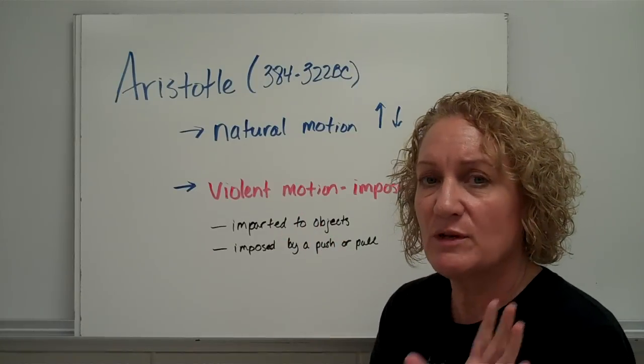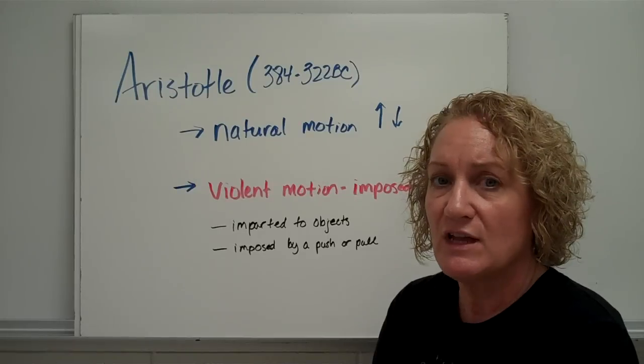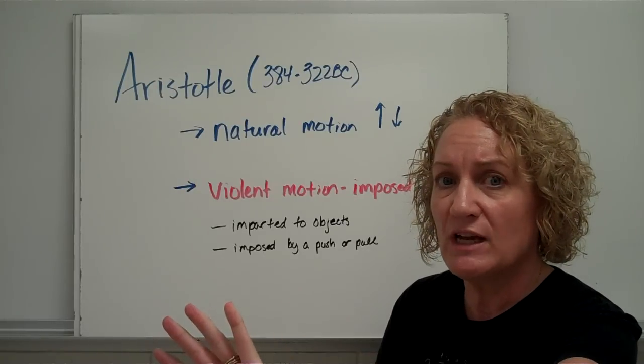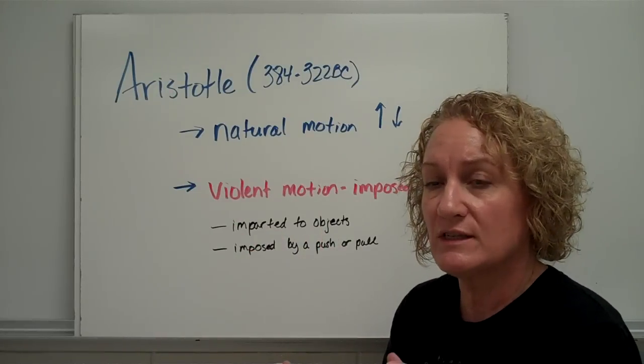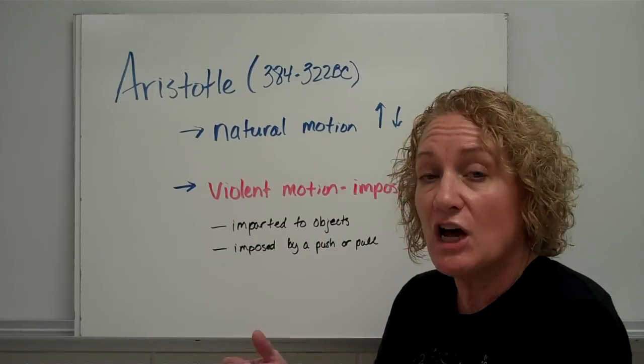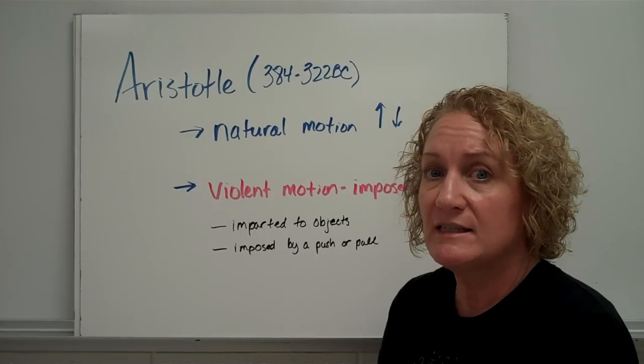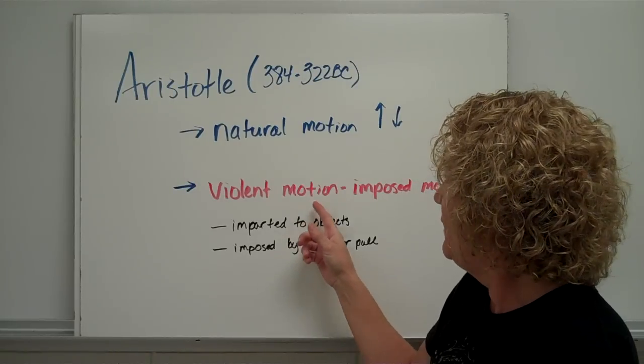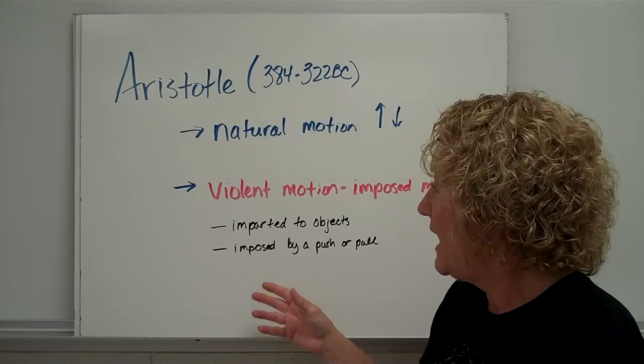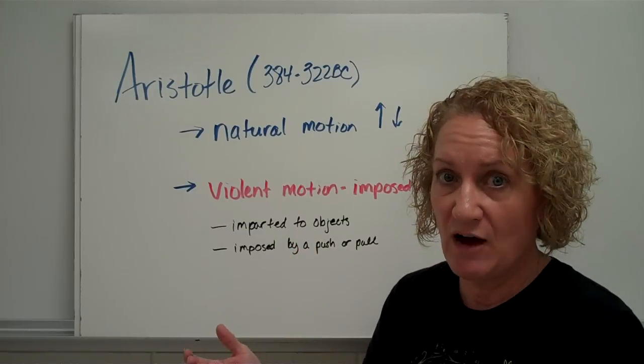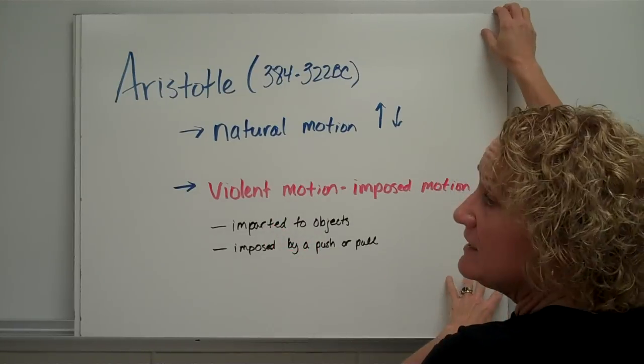Violent motion was opposed motion. It was imparted motion. It was motion that was given to something as a result of something else. So a boat moves on the ocean because the wind forces it and the wind is one of those imposed forces. A tug of war, the rope is moved because people are pulling on the rope. And that is imposed motion. So violent motion is not natural. It's imparted to objects. It's given to objects. And it's imparted by a push or a pull, which we now call a force. But Aristotle didn't call it that. So that was what Aristotle and the scientists of his day believed.